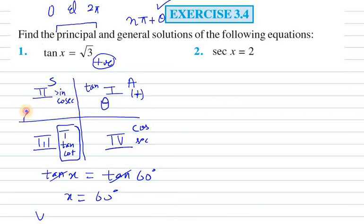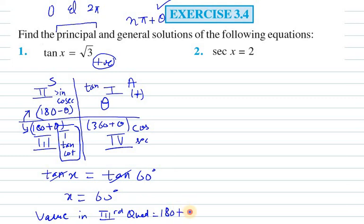In first quadrant it is theta value. For second quadrant it is 180 minus theta. For third quadrant it is 180 plus theta. And for the last quadrant it is 360 degree minus theta. So value in third quadrant will be 180 plus theta—180 plus 60.